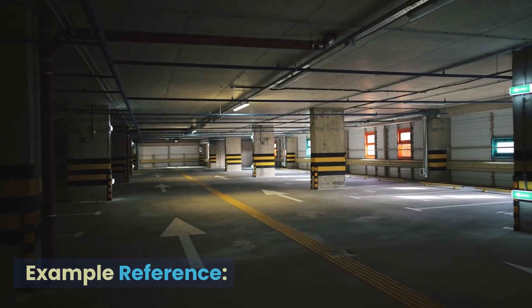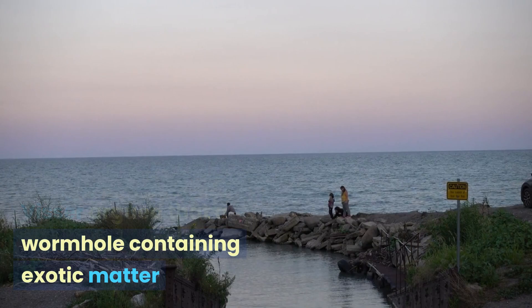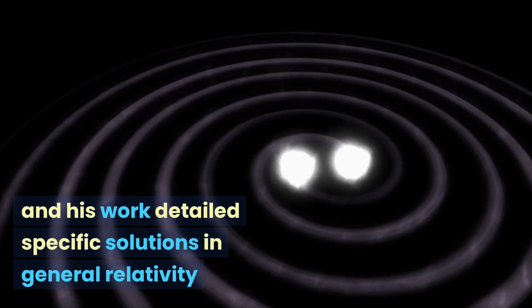Example reference: In 1992, physicist Matt Visser argued that a wormhole containing exotic matter could be used for traversal by human beings, and his work detailed specific solutions in general relativity that would allow such a wormhole to be stable.